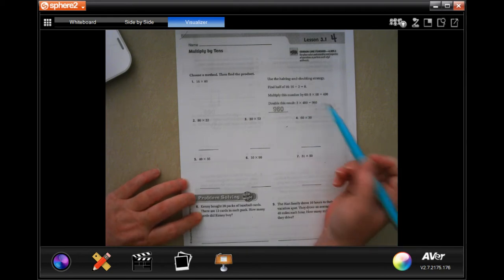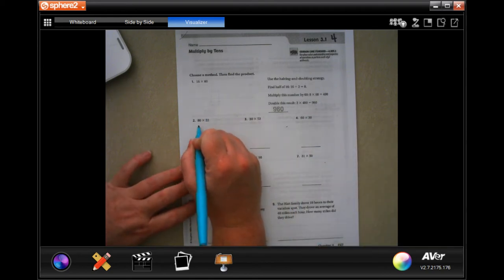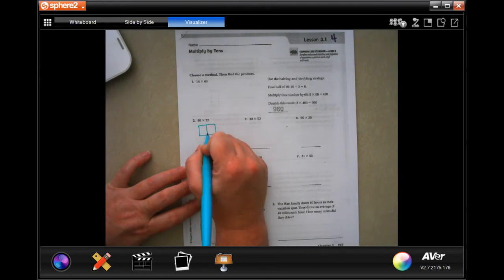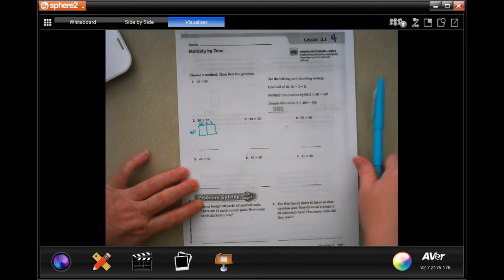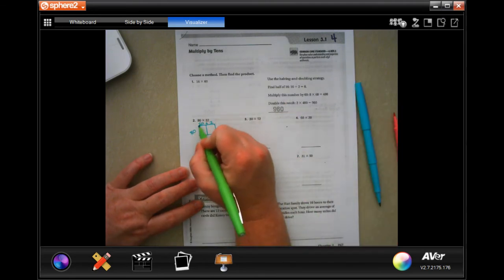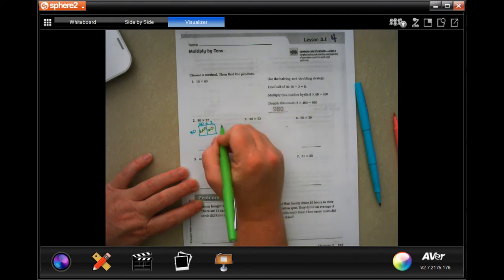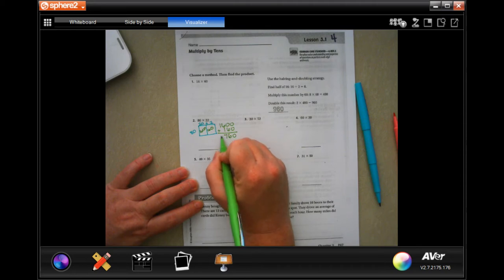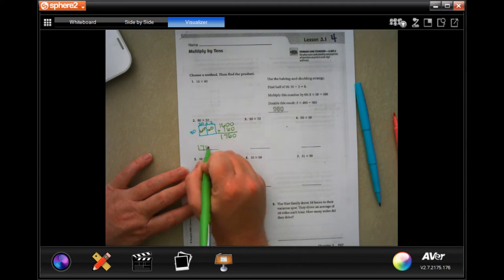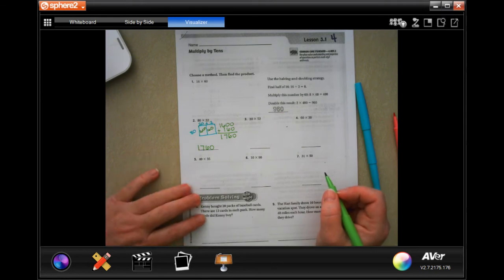We're going to draw our box. And we put our 20 plus 2, because 22 is 20 plus 2. We're going to put 80 over on the side. So now 8 times 2 is 16, and there's two zeros. And then 8 times 2 is 16 again, and there's one zero. So now I have 1,600 and 160, and I just add those two up. So now my answer is 1,760.